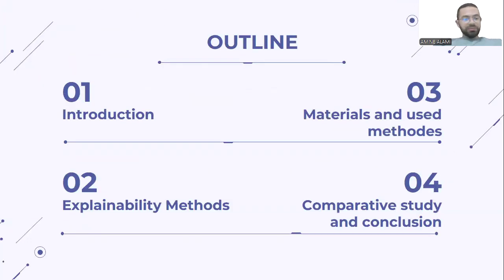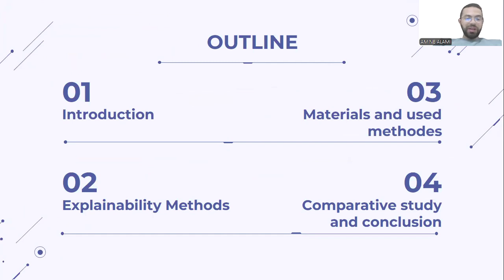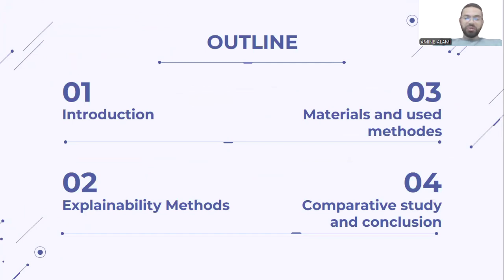This is the outline. Firstly, I will provide a brief introduction to the topic of my research. Following that, I will discuss the explainability methods used in this paper. Next, I will outline the materials and methods employed in the study. This will include the data description, the deep learning model, and visualization results. And finally, I will conclude with a comparative study and conclusion.